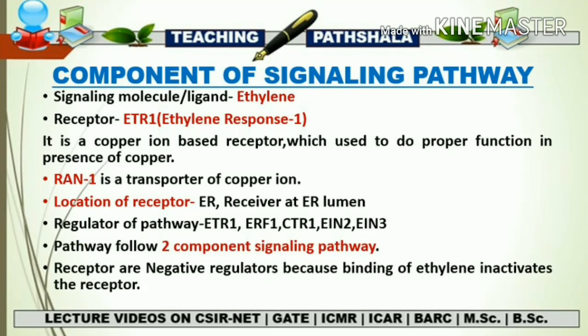The location of the ETR1 receptor is the ER membrane, but the receiver domain of this receptor is present at the ER lumen side. The key regulators in this pathway are ETR1, ERF1, CTR1, EIN2, and EIN3. The Ethylene signaling pathway also follows the two-component signaling pathway system, just like the pathway system seen in bacterial systems.